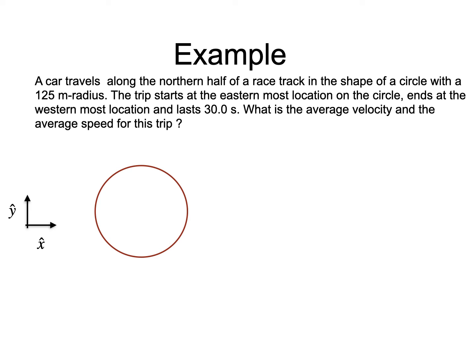Here is the circular racetrack. The trip itself occurs only along the northern half circle. The displacement vector for this trip has its tail at the easternmost point of the circle and its tip at the westernmost point.